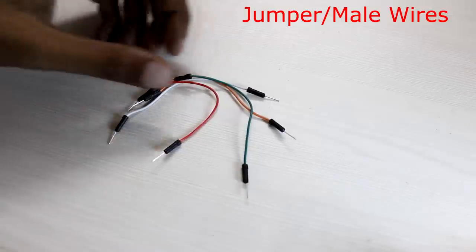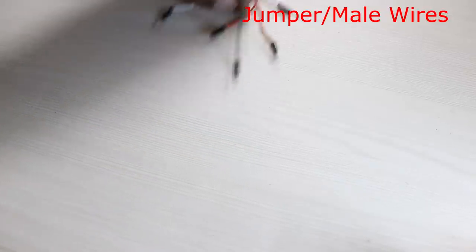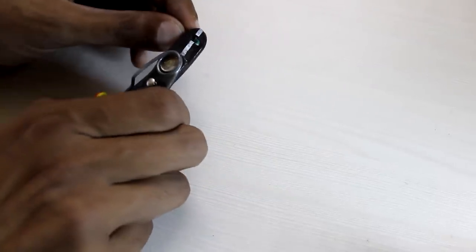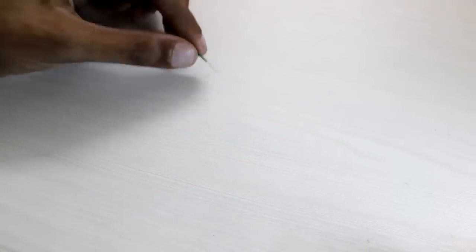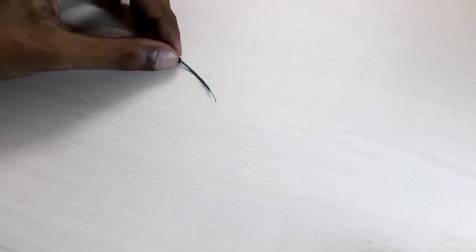We can also use male wires which look like this. These can be used to connect the circuit as well. Let us see what's inside them. Let us cut it into two first. Then strip the insulation off. And as you see there is only copper inside. The copper connects the pins internally.